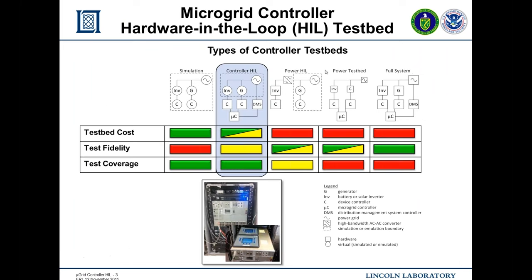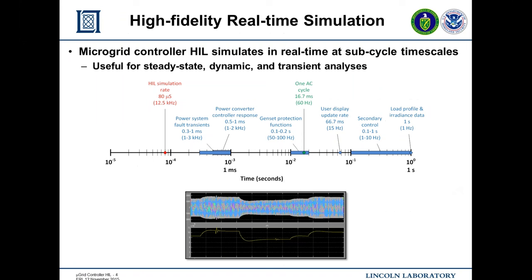We've been focusing on controller hardware-in-the-loop, covering tradeoffs in cost, fidelity, and test coverage. Fidelity refers to accuracy of tests — largely determined by whether actual control code from the final system is used. Test coverage means being able to test edge conditions without risking equipment damage. We see controller hardware-in-the-loop as the sweet spot for microgrid testing. Feedback from utilities confirms it's compelling because it enables steady-state analysis, dynamic and transient analysis, and takes controls behavior into account — something traditional power/distribution system tools cannot do.